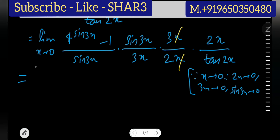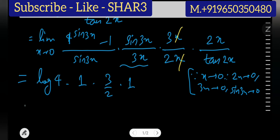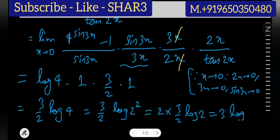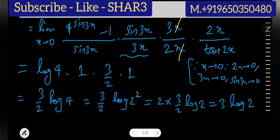Applying the formula, the exponential part gives log of 4, the sin3x over 3x gives 1, giving a factor of 3. The 2x over tan2x gives 1. Overall we have (3/2) log of 4. Since 4 equals 2 squared, this becomes (3/2) times 2 log 2, which equals 3 log 2. This can further be written as log 2 to the power 3, that is log 8.